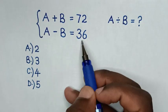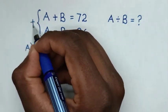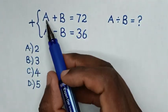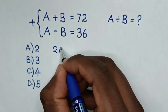So, from these two equations, we'll find the sum of these equations. It will be A plus A is 2A.